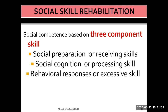The three components of social skill rehabilitation are: first, social perception or receiving skills — how the person perceives messages from others; second, social cognition and processing skills — the thought process of how they perceive information in their mind; and third, behavioral responses or expressive skills — how the patient gives a response or behaves toward society members. All three are taught in the social skill rehabilitation process.